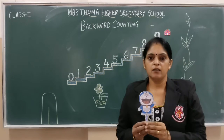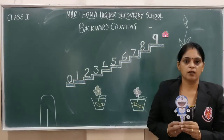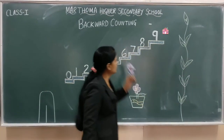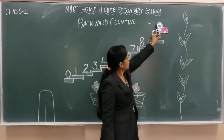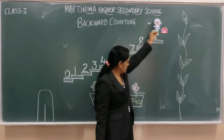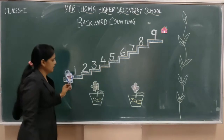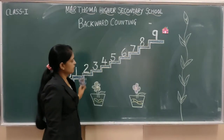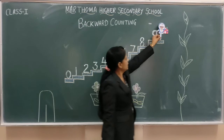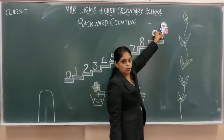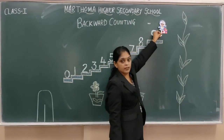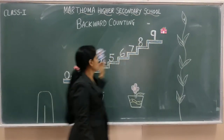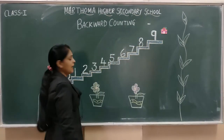One day there was a Doraemon. He lived in a house. So he wanted to play in the garden. This is the garden. So he came out of his house and he started counting 9 to 0 — backward counting.